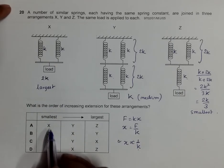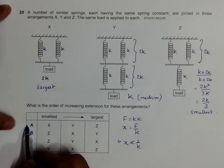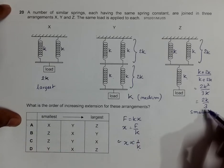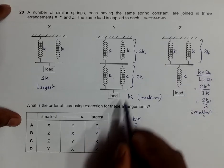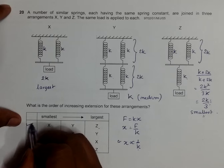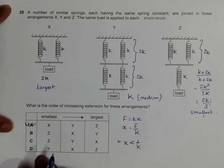That's why X smallest is choice number A. And smallest K here means largest X or extension. So here in Z large extension is given. This is the middle, so choice number A should be the correct answer for this question.